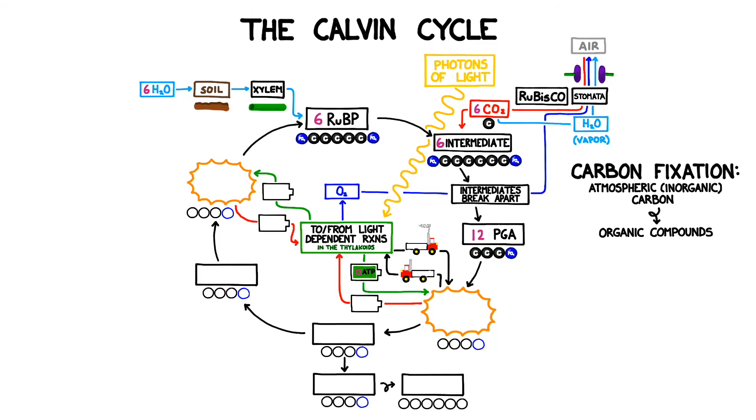12 ATP provides the energy, and 12 NADPH each provide a proton and the two electrons. The ATP reverts to low-energy ADP and then returns to the light-dependent reactions to be recharged. The NADPH reverts back to NADP+, and also returns to the light-dependent reactions for another load. When we combine the 12 PGA, the electrons, the protons, and charge it with energy, we get 12 PGAL.